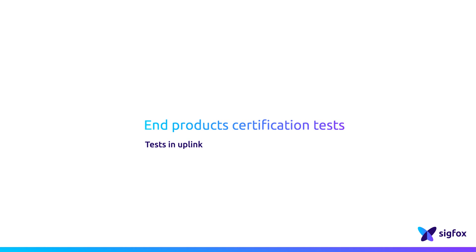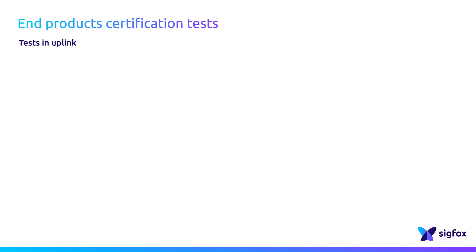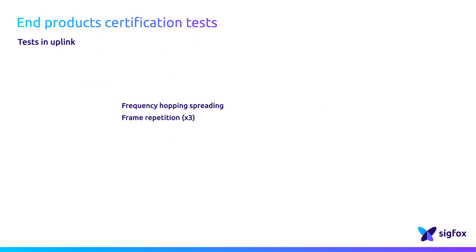The tests are performed for uplink communication about frequency hopping and frame repetition. Firstly, before shipping the device to Sigfox, 10 consecutive messages must be emitted by the device and received by the Sigfox cloud. Frequency hopping and spreading is checked. Three repetitions of each message must be received by the Sigfox cloud.